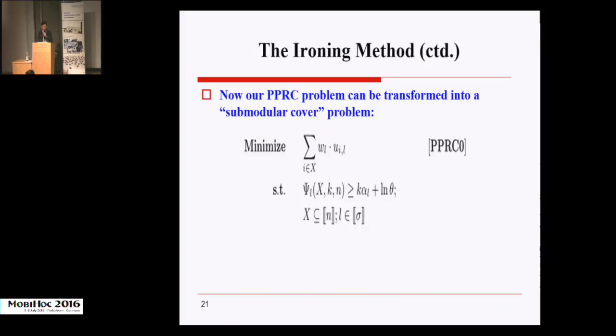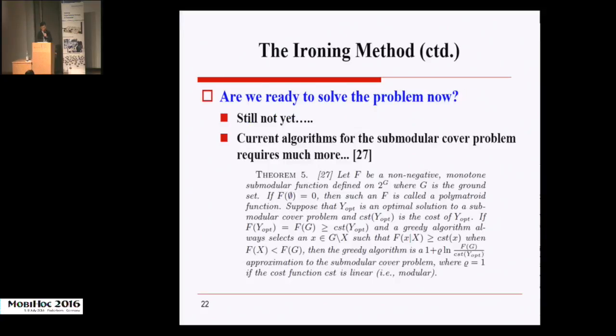These problems prohibit us from using the existing submodular optimization techniques to solve our problem. Therefore, we further propose a general surrogate function for the PBD. The surrogate function is actually a piecewise function and very nice. We can prove that the function is non-negative, submodular, and well-defined for any subset of 1 to n.